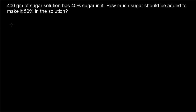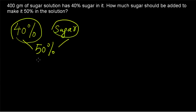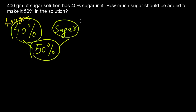Welcome to today's class. Today's question is: 400 grams of sugar solution has 40% sugar in it. How much sugar should be added to make it 50% sugar? So here, a 40% sugar solution is getting combined with more sugar so that the resultant is a 50% sugar solution. The quantity of the sugar solution is already given as 400 grams, and we need to find out how much sugar is to be added.